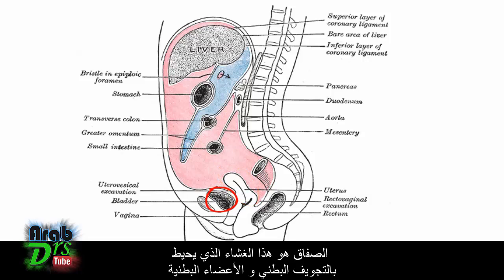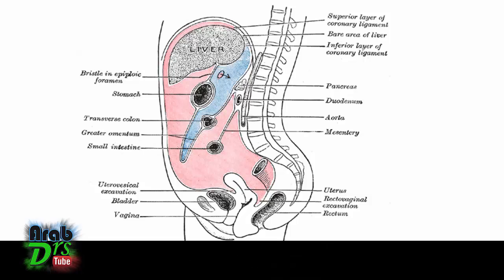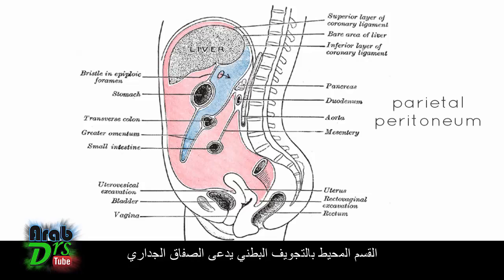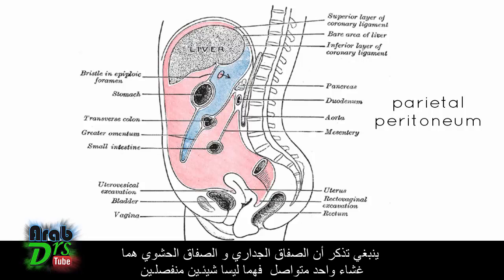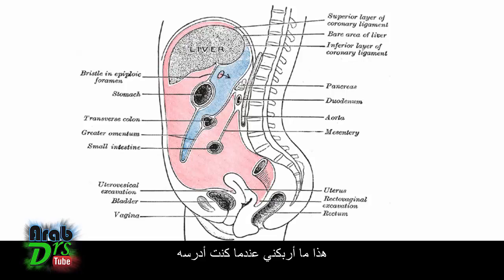The peritoneum is this membrane which surrounds the abdominal cavity and the abdominal organs. The bit which surrounds the abdominal cavity is called the parietal peritoneum. What you have to remember is that the parietal peritoneum and the visceral peritoneum are one continuous sheet — they're not separate things. The parietal peritoneum lines the abdominal cavity.